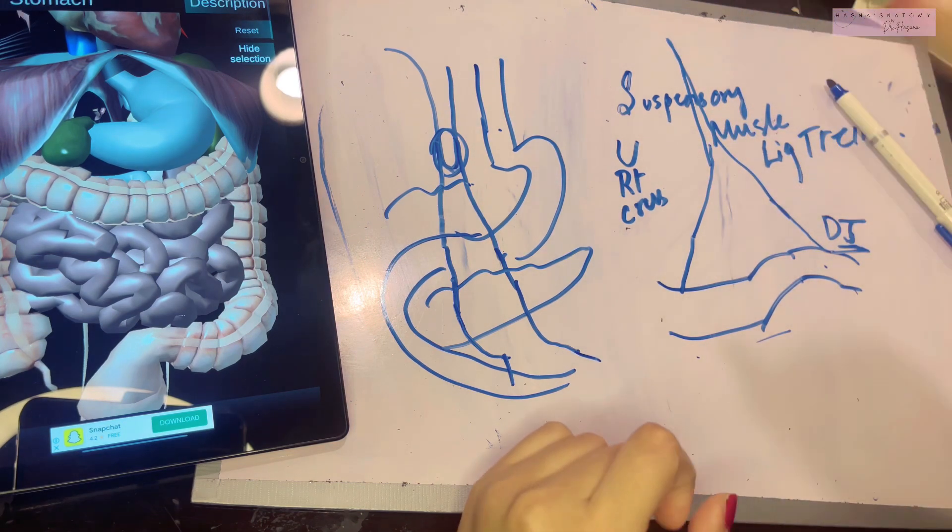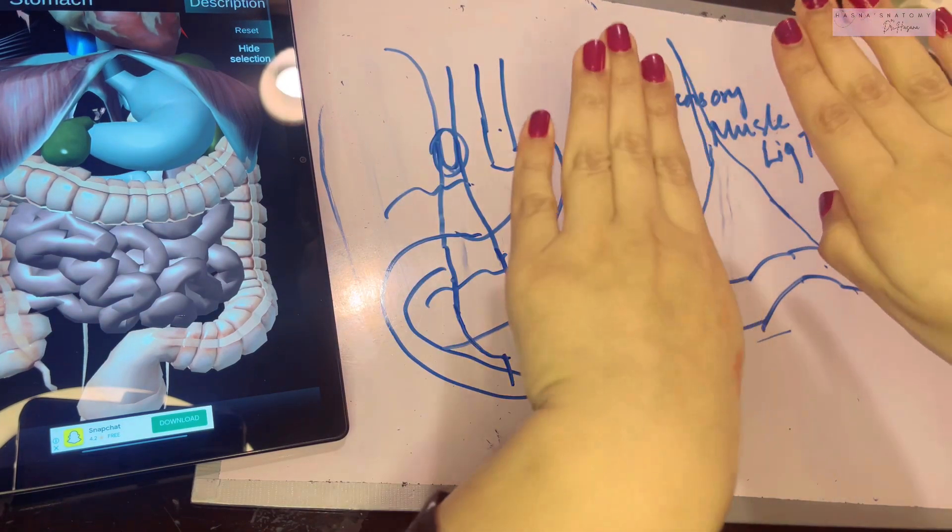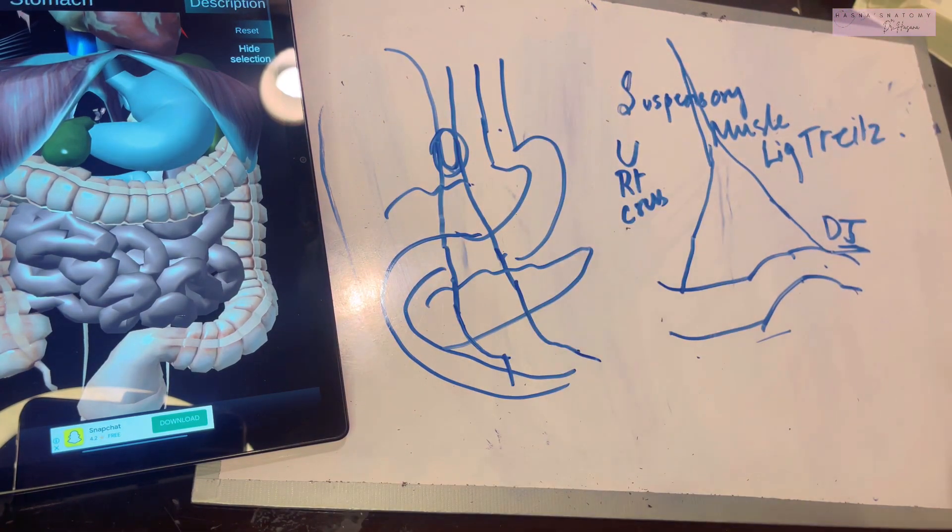Whenever this ligament contracts, the duodenojejunal flexure will open. The angle of DJ junction will open, which means it will allow the passage of food. So according to the usage, according to the requirement, when food has to be passed towards your next part of the small intestine, this ligament usually contracts to allow this junction to be opened and the food to proceed forward.